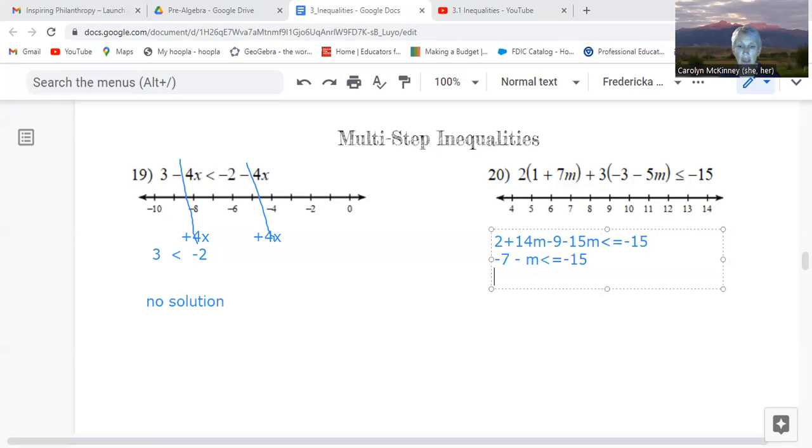And we're going to get rid of that negative 7 by adding 7 on both sides. So the negative 7 and positive 7 cancel out. Now I have negative m is less than or equal to negative 8. And I would need to divide both sides by negative 1. And you know the rule, if we multiply or divide by a negative, we're going to have to flip the sign.